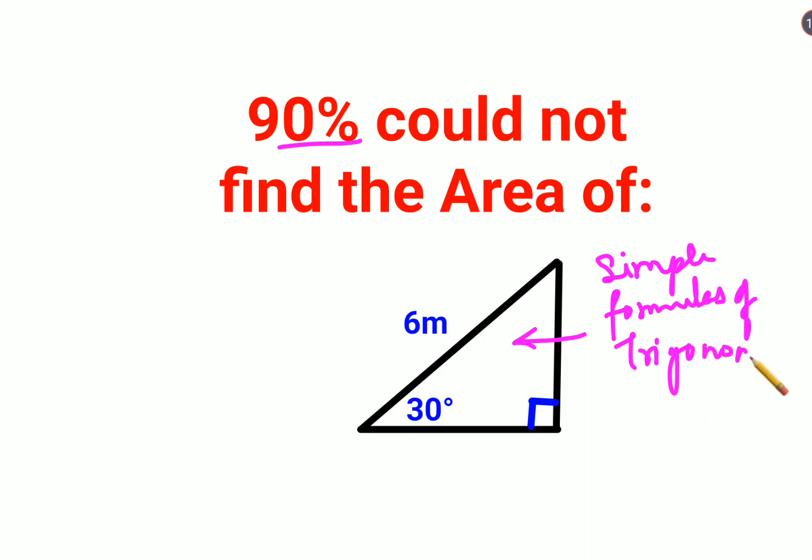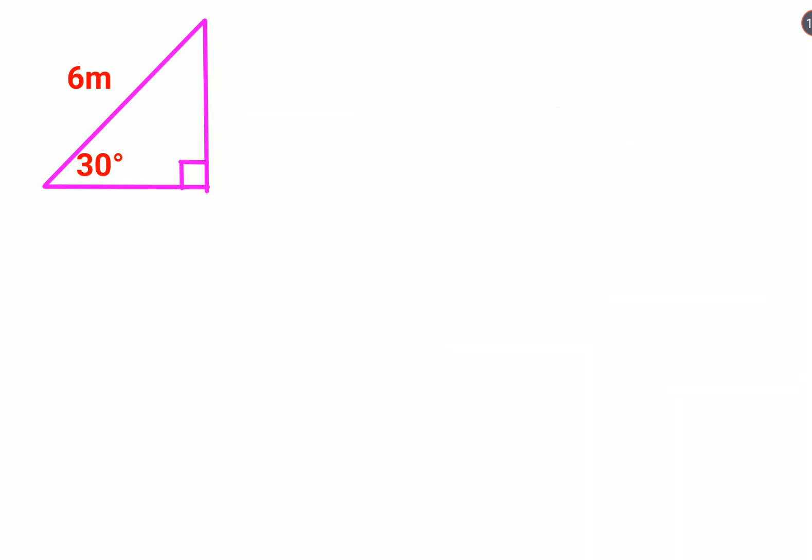So let's very quickly understand how to apply trigonometry here. What they've given us is the hypotenuse, which is 6 meters, and the angle, which is 30 degrees.